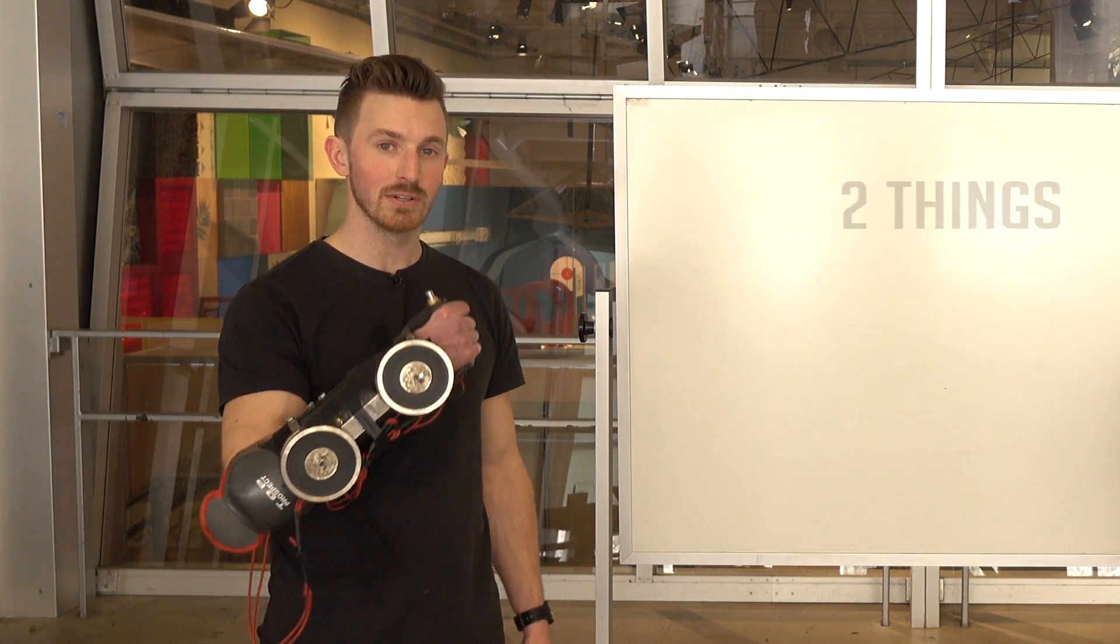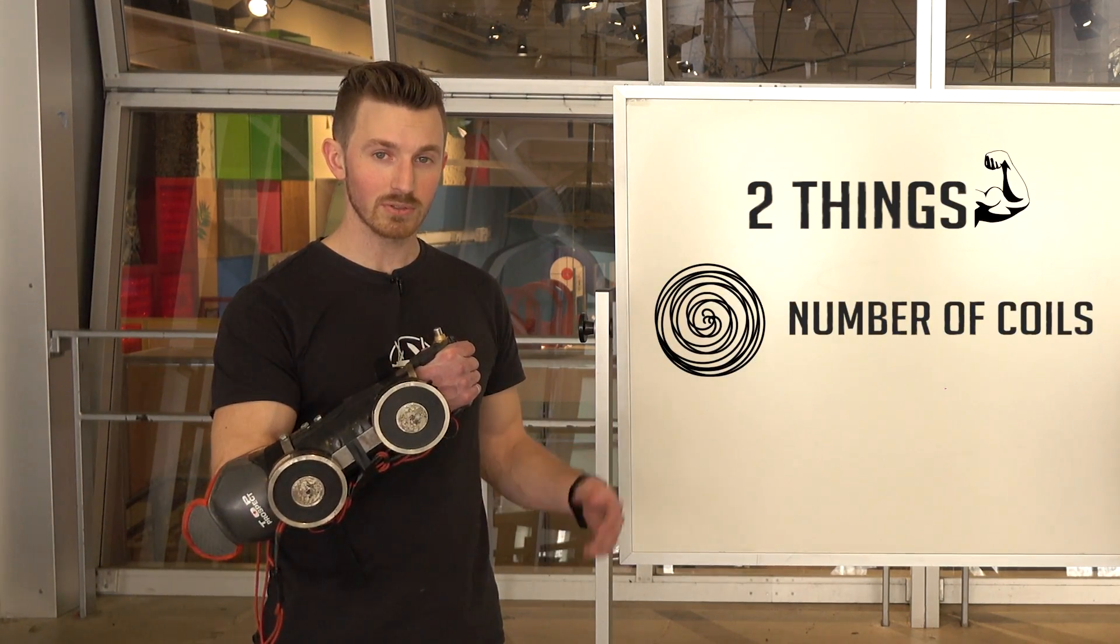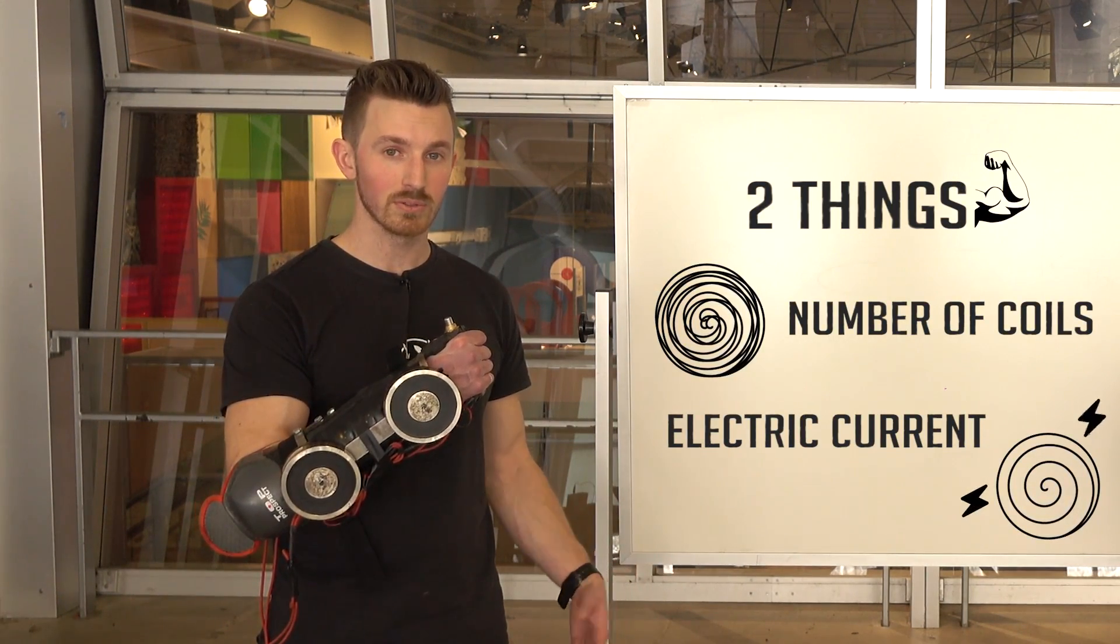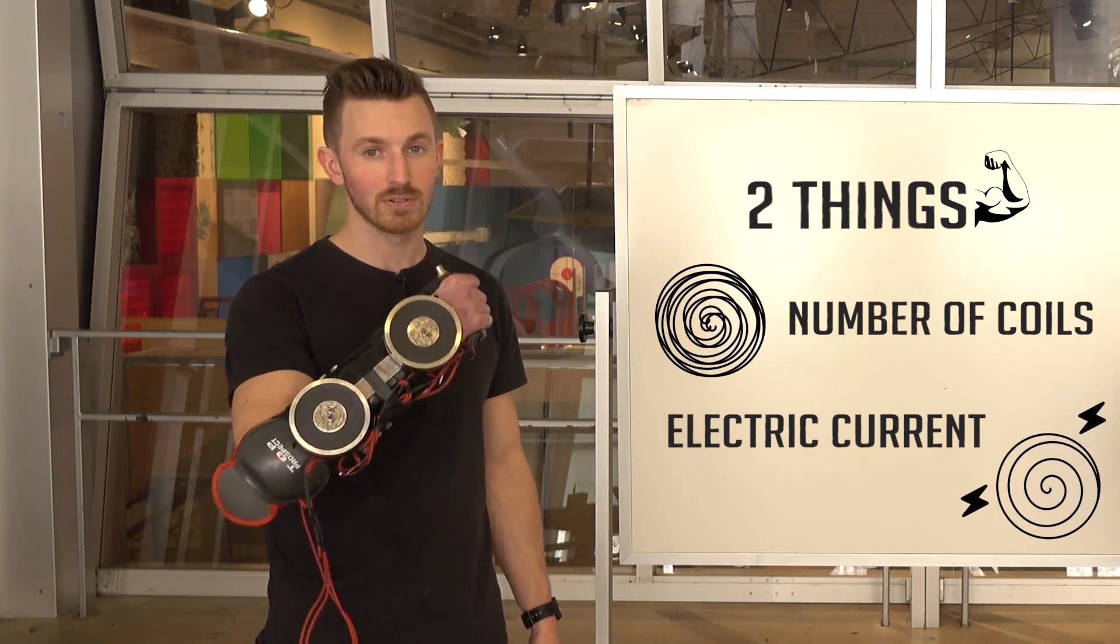Now the strength of the electromagnet varies on two things. The amount of coils or the amount of current running through them. Put simply, the more coils or more current equals a much stronger field.